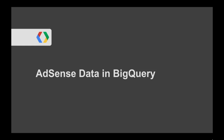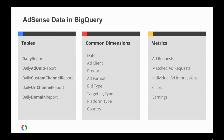Now I'm going to talk about the AdSense data we're making available. It's the same data available in the UI and the API, split into five tables. The basic daily report table exposes all the common dimensions. The ad units, custom channel, and URL channel dimensions are each available in their own respective tables, which also expose all the common dimensions. Lastly, we have the domain table, which exposes date, ad client, product, and domain. All of these tables expose the same five raw AdSense metrics.